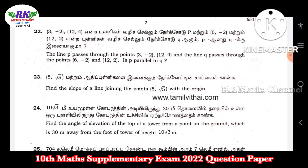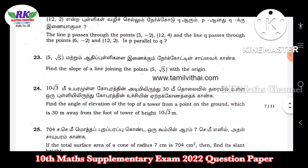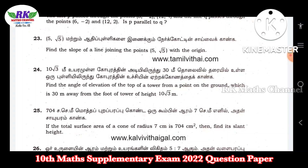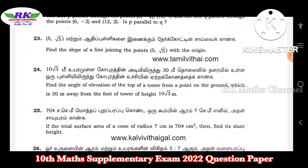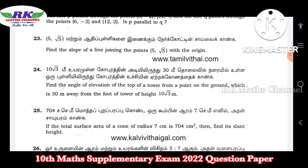Question number 23: find the slope of a line joining the points (5, root 5) with the origin. So slope — one point is (5, root 5) and the origin is (0, 0). Then use the slope formula for two points to get the slope of the line.